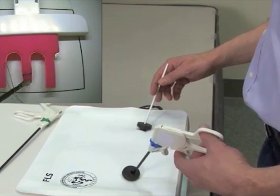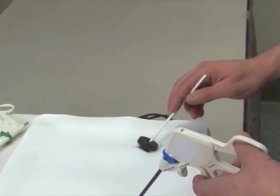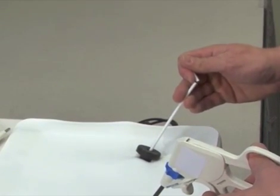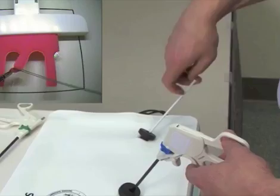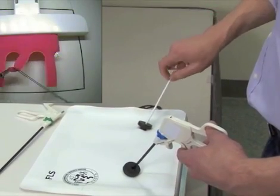Firmly grasp the multi-use ligating loop at the end opposite the loop. Break the tube at the scored line. The multi-use ligating loop is now ready for up to ten uses.